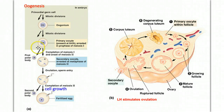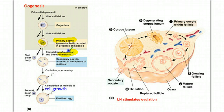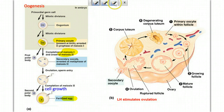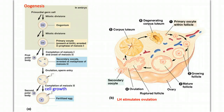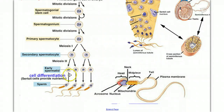We know that for a gamete to be produced, a diploid germ cell — in this case the primary oocyte — has to undergo the process of meiosis to produce a haploid gamete, in this case an egg. However, there is a difference here between oogenesis and spermatogenesis. When we looked at sperm production, we saw that one diploid germ cell gave rise to four haploid sperm — that's how normal meiosis occurs.